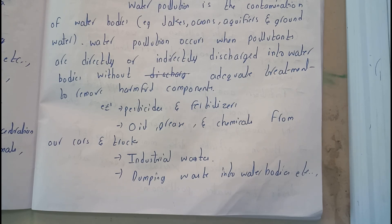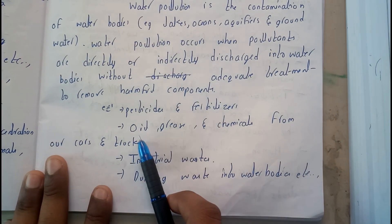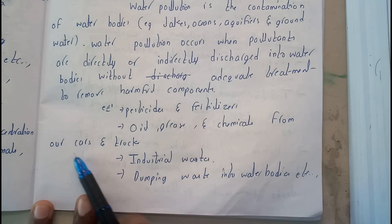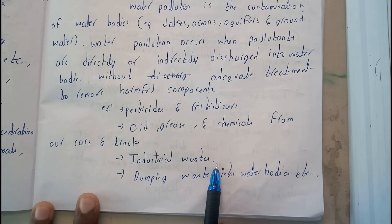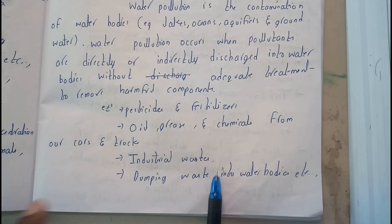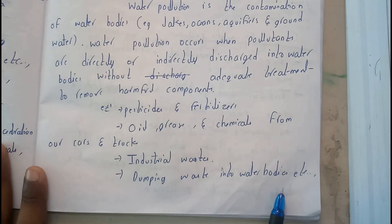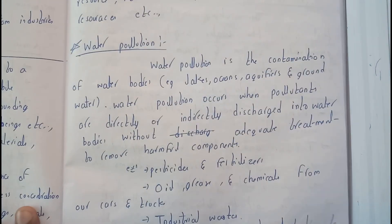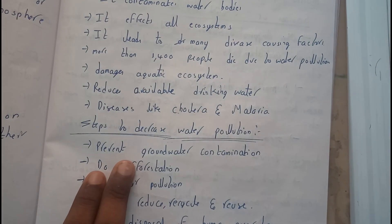So pesticides and fertilizers are really dangerous. Farmers should use eco-friendly materials to decrease water pollution. Also, oil, grease, and chemicals from cars and trucks cause water pollution, and industrial wastes or directly dumping any waste into a water body also causes water pollution.